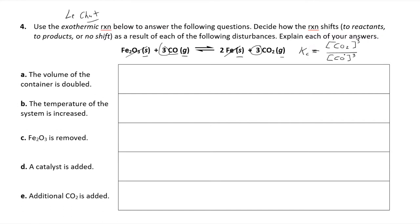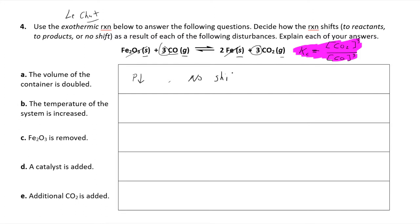If you're going to do a Le Chatelier problem, you must have the equilibrium expression written first. Now, if we double the volume: doubling the volume gives everything twice as much room, which means pressure is decreased. When pressure decreases, you shift to the side with the greater number of moles of gas. But here it's a trick question — there are three moles of gas on each side. So there is no shift, because this reaction is not pressure-dependent.